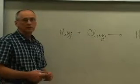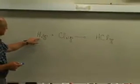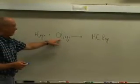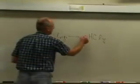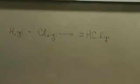To write the balanced reaction equation for the reaction between the hydrogen and the chlorine, we see that we have two hydrogen atoms on the left side and two chlorine atoms on the left side, and therefore we will need to have two HCl molecules on the product side.